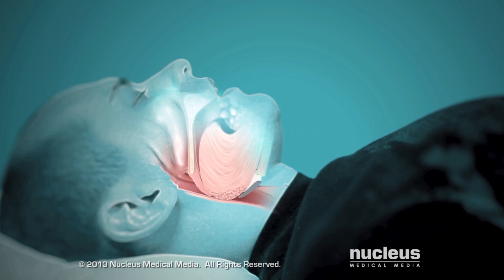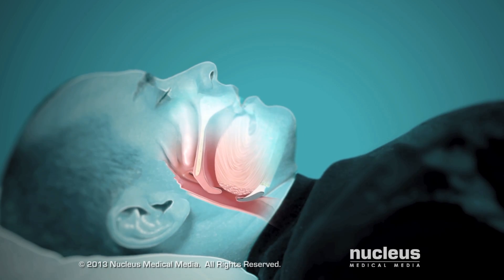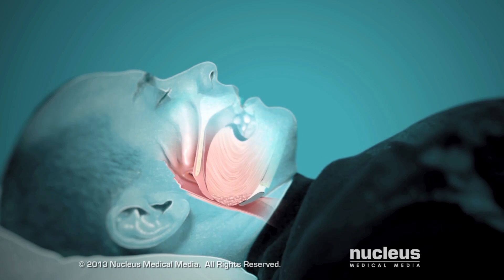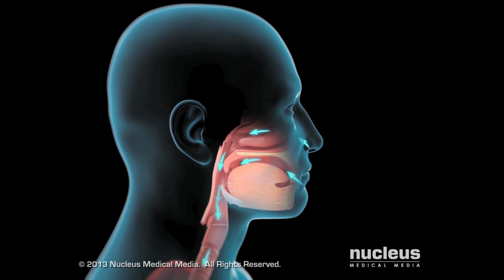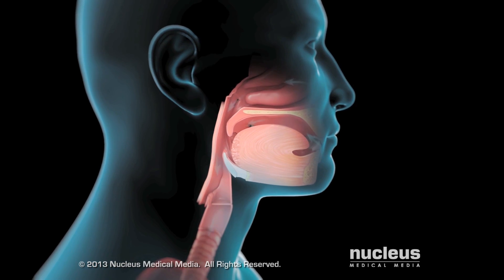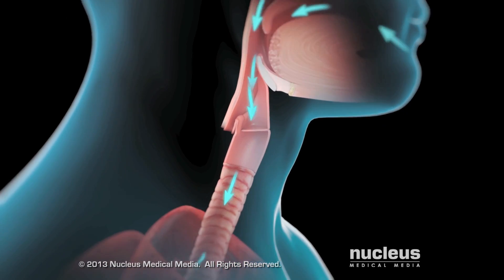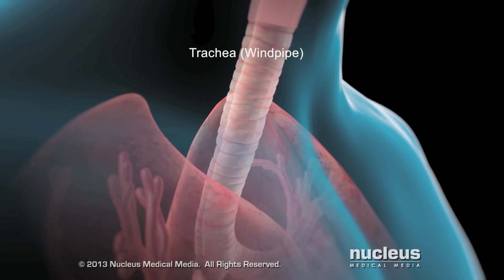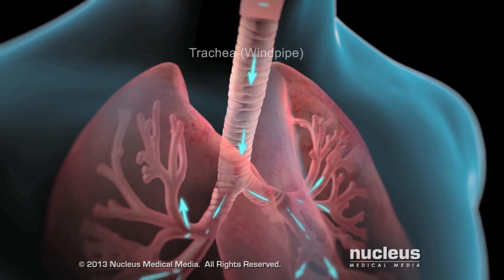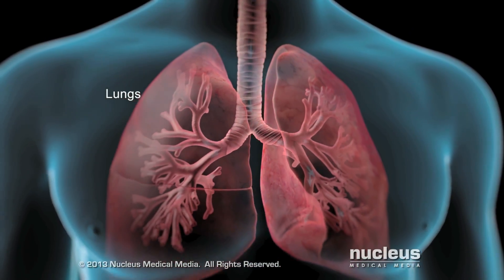If you have obstructive sleep apnea, your breathing pauses for brief periods while you're asleep. Normally, when you breathe in, air flows in through your mouth and nose and down your throat, also called the pharynx. Air then flows down your windpipe or trachea, spreading through a tree-like structure of smaller tubes into your lungs.